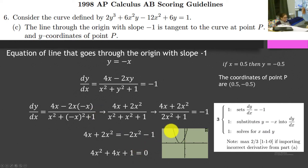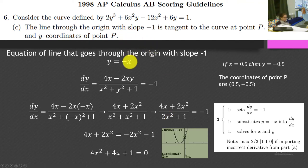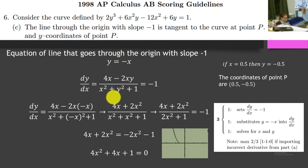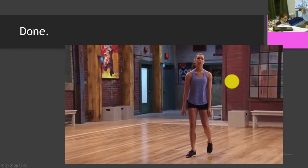There's another way to do this: get the equation y equals negative x and substitute into the original equation — you'll get the same value. You can do it either way. I just like plugging into the derivative because it reinforces the idea that derivative means slope. But we did it — we're done.